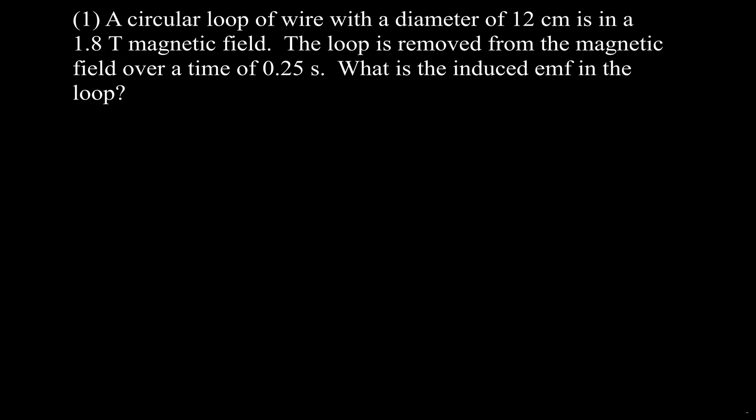The loop is in the magnetic field, which means it has some flux — there is magnetic field through the loop. When we take it out, the magnetic flux at the end is going to be zero. So we use this equation to calculate the induced EMF, the induced voltage.